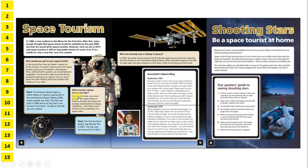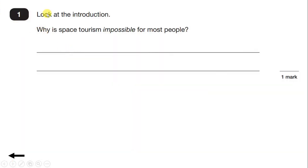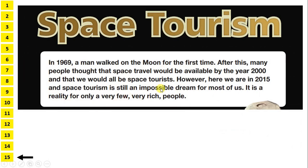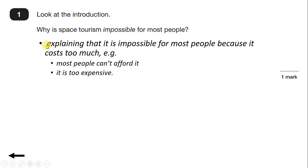Rather than reading the whole text straight away, after reading the title, introduction, and looking at the pictures, I like to go to the answer booklet and look at the first question. The word 'impossible' means 'not possible', but we don't even need to know that because the word 'impossible' appears in the introduction. Space tourism is still an impossible dream for most of us — it is a reality for only a very few, very rich people. So space tourism is only possible if you're very rich.